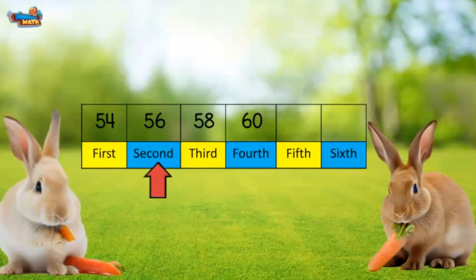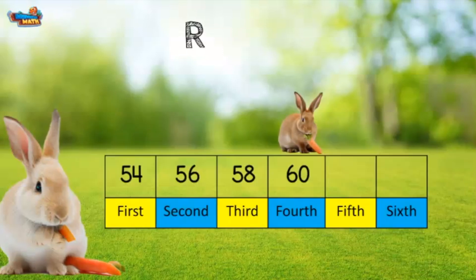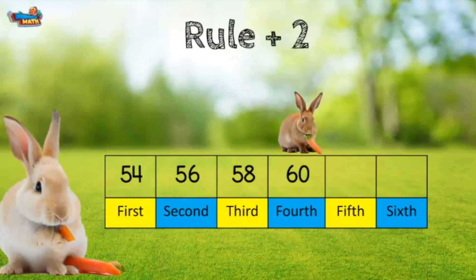The ordinal number words below the digits are used to describe the position in the pattern the digit is in. We are going to find what digit will be in the fifth and sixth position. The rule we are going to use is plus 2.